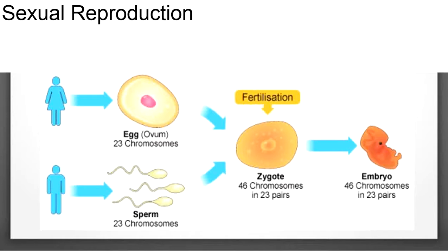The new individual will receive some characteristics or traits from each parent. A trait is any characteristic of a living thing. For example, a plant may be tall and have pink flowers. Height and flower color are traits that may be passed to offspring from the parents.